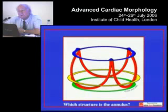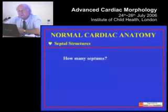Which structure is the annulus? It pays your money, it takes your choice — but the bottom line in terms of function is that the valvar mechanism depends upon the coronet-like attachment of the leaflets. And Andrew will emphasize all that to you very shortly.